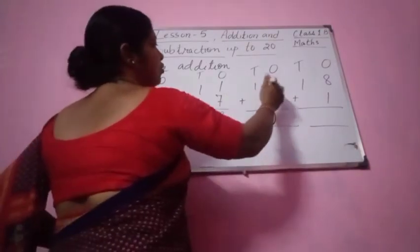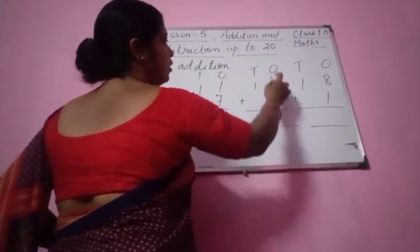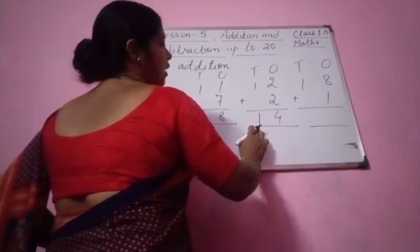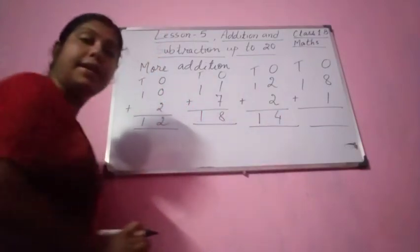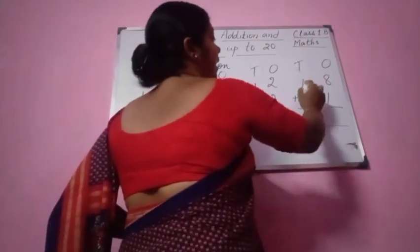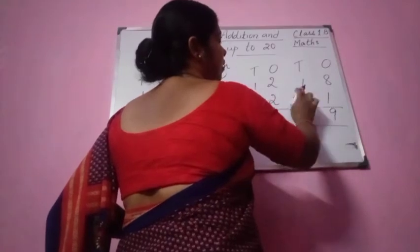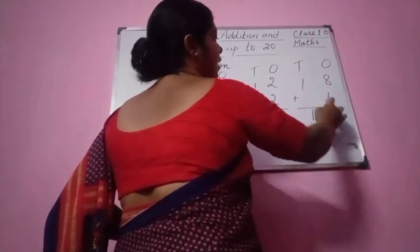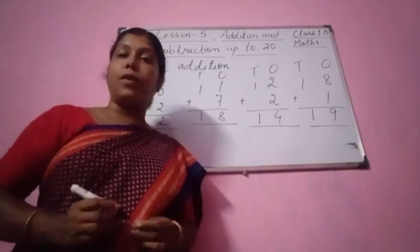Next one: 12 plus 2 here. So 2 plus 2 equal to how much? 2 plus 2 is 4. And underneath 1 there is nothing, so 1 will come down here. 14 is the answer — 1 ten and 4 ones. Next one: 18 plus 1. 8 plus 1 equal to 9, and 1 will come down. 18 plus 1 equal to 19 — 1 ten and 9 ones.